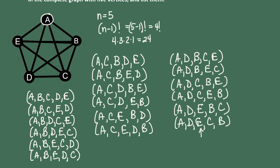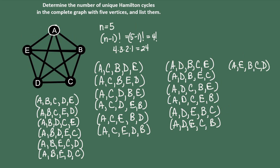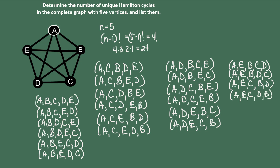Now we're going to do AEs, which leaves B, C, and D. We start with alphabetical order: A→E→B→C→D→A and A→E→B→D→C→A. Then A→E→C→B→D→A and A→E→C→D→B→A. And finally A→E→D→B→C→A and A→E→D→C→B→A. At this point you can see we have four lists with six cycles each, so we have all 24 of our cycles.